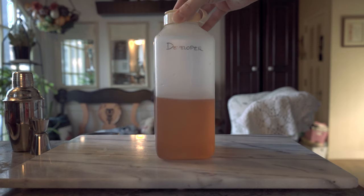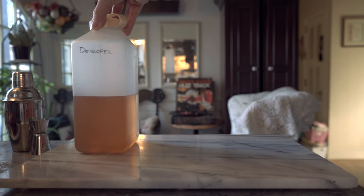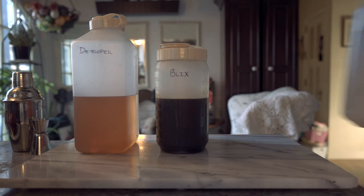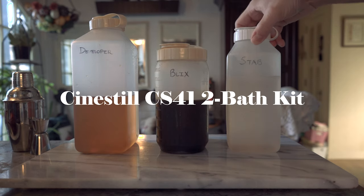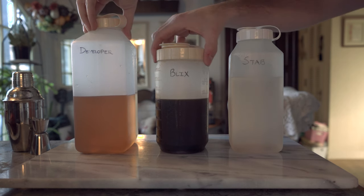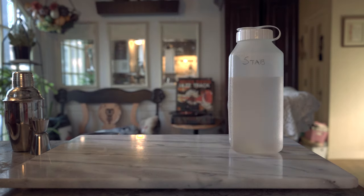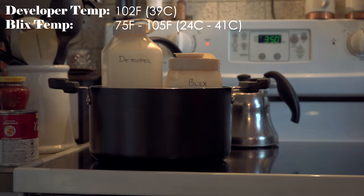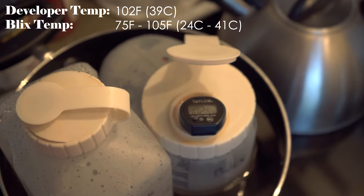The chemicals you'll need are developer, blix, and stabilizer. I use Cinestil's CS41 color developing kit. Now let's take the developer and blix and heat them up. I put the bottles in a pot of water and heat them to 102 degrees. Once they are up to temperature we can begin.